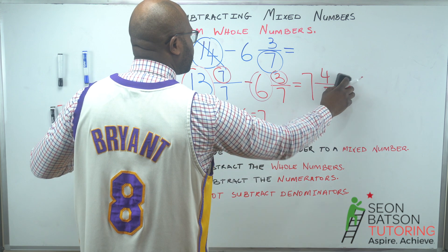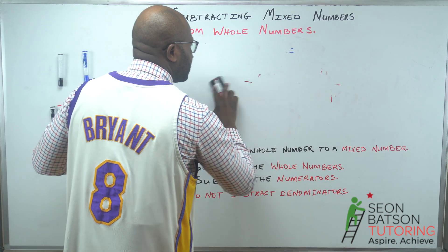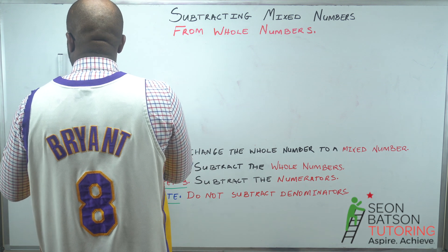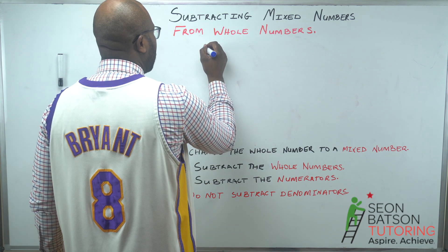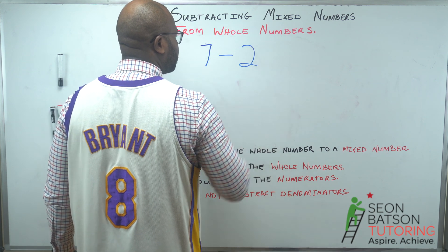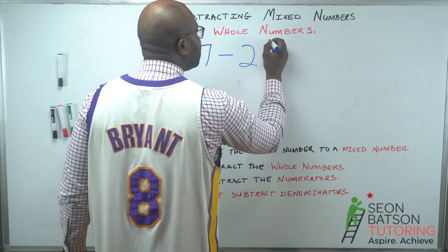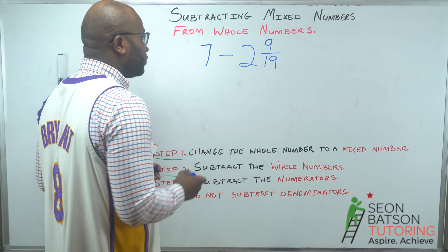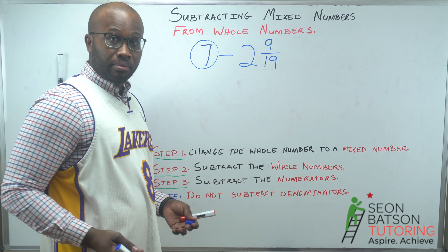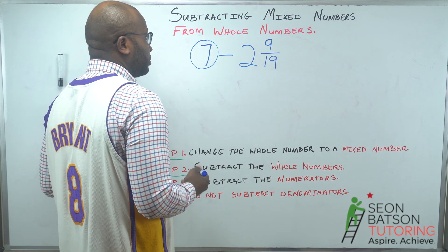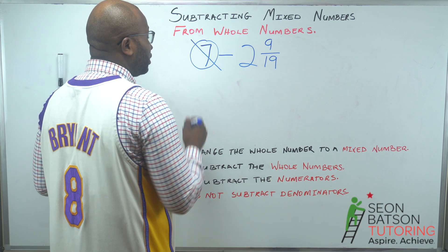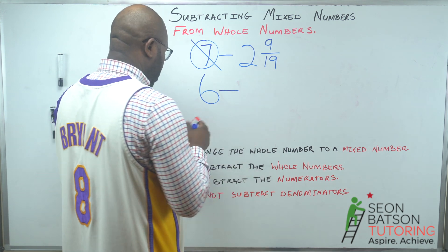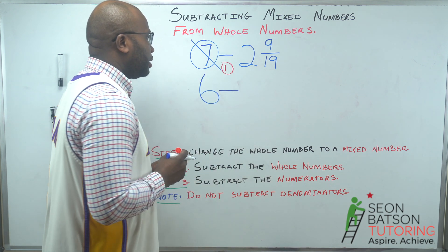Let's try our next one: 7 take 2 and nine over 19. Step one — we will change our whole number to a mixed number. We first borrow one from the whole number. If we borrow one, six is left, because 7 take 1 is 6.